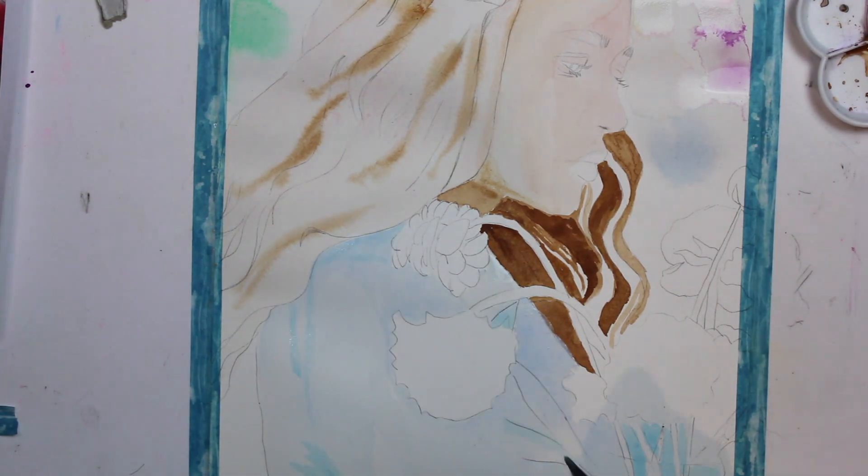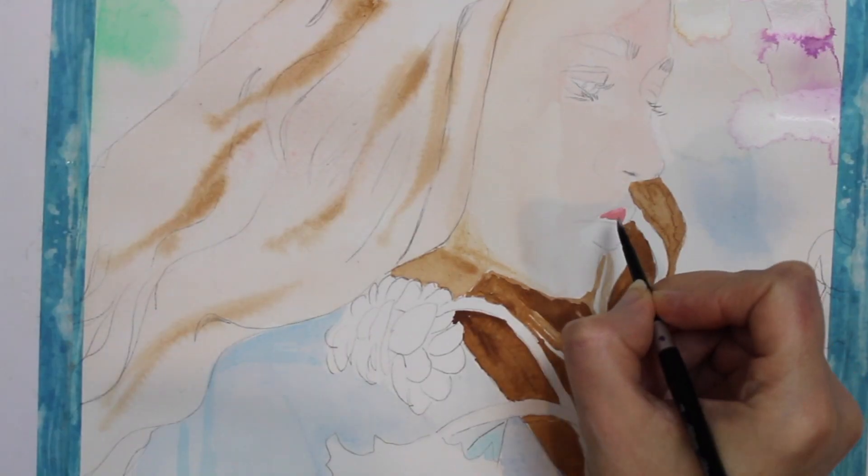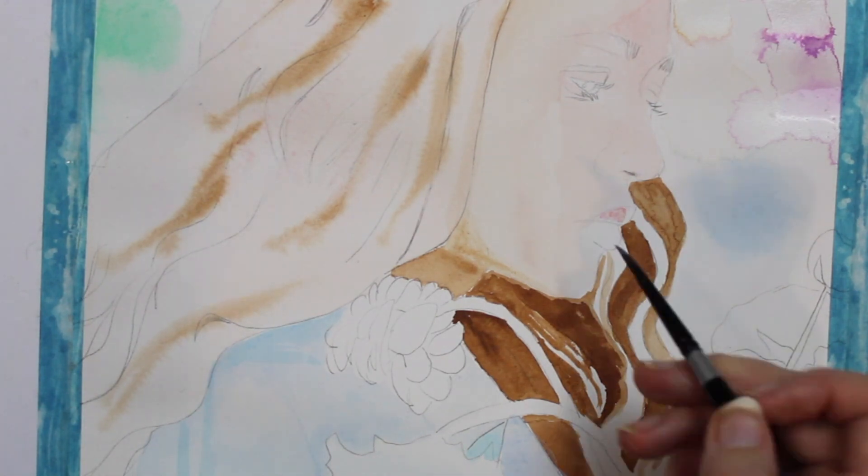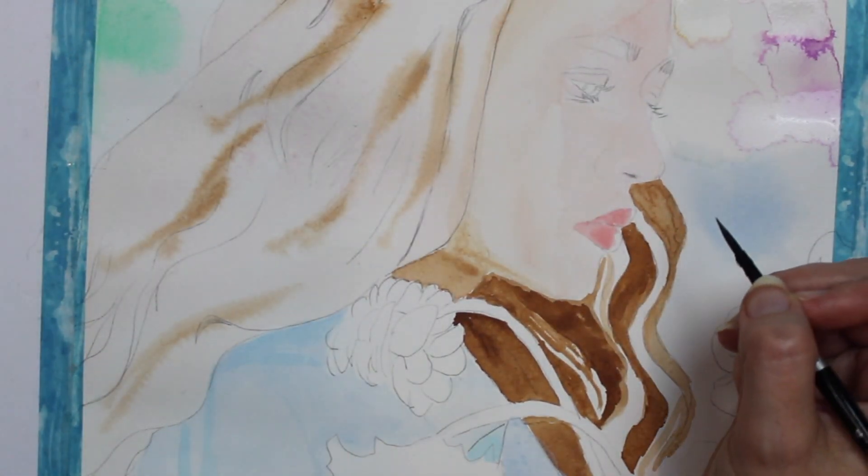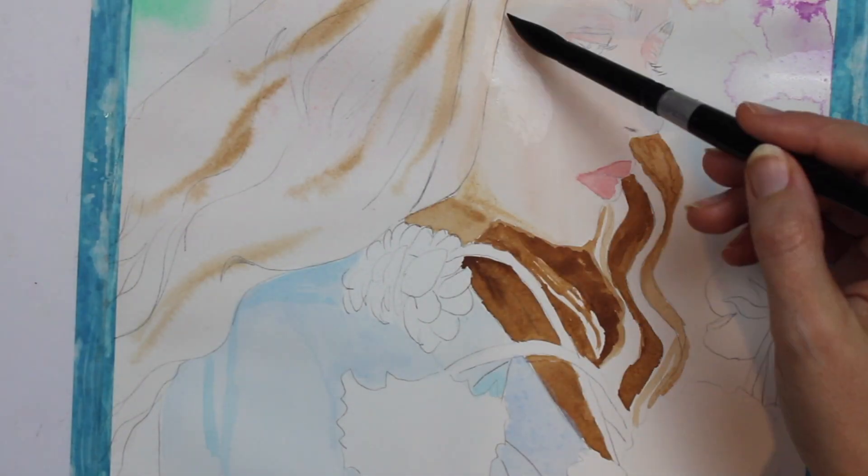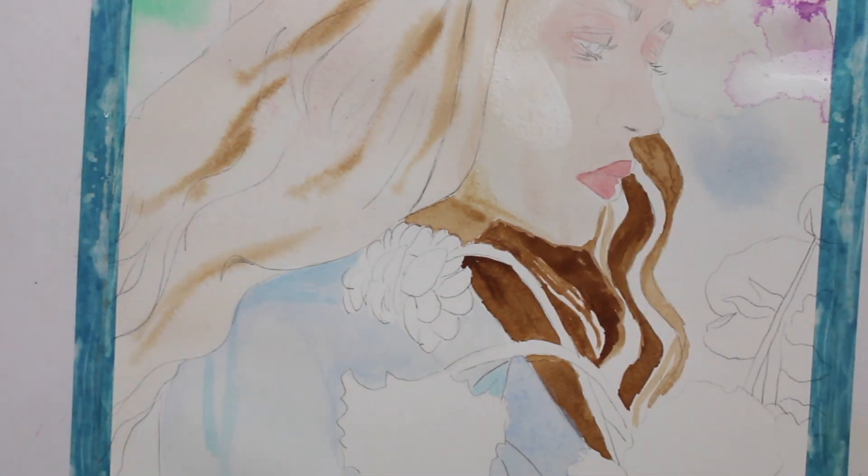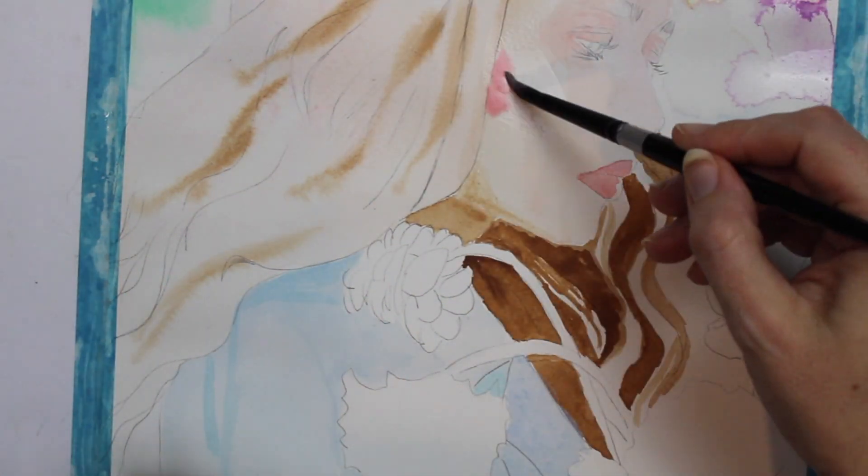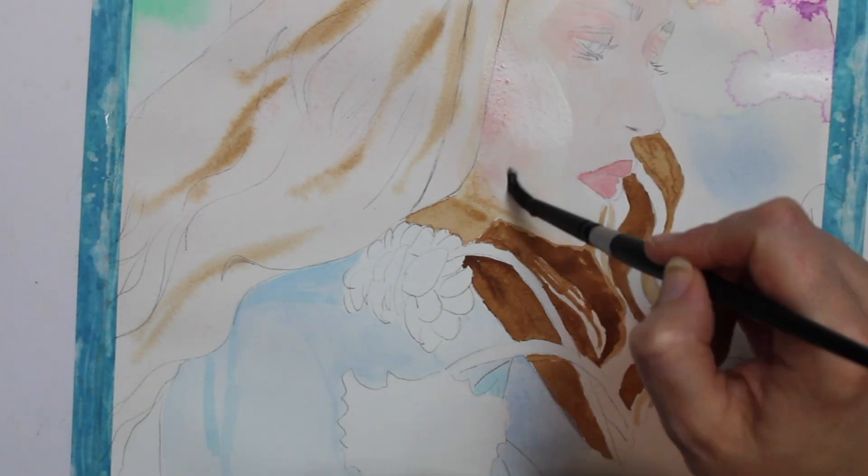For the lips I decided to use rose because I thought that was a really good tone to use for the lips and I'm then adding a second layer of skin tones. I wet the areas down first and I'm reapplying areas such as rose to get darker areas.